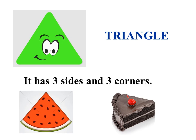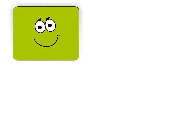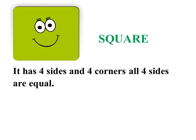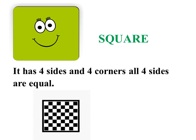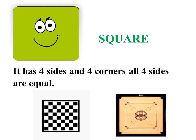What is the next shape? It is a square. Square has four sides and four corners, and all four sides are equal. Have you seen a chessboard? It is square in shape. Have you ever played on a carom board? The carom board is also square in shape.